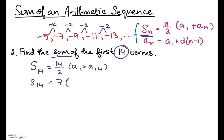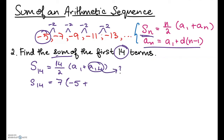Simplifying, S of 14 equals 7 times (a of 1 plus a of 14). A of 1 is -5 because that's the first term in our sequence. We still need to find a of 14, so we'll use the nth term formula just like before.